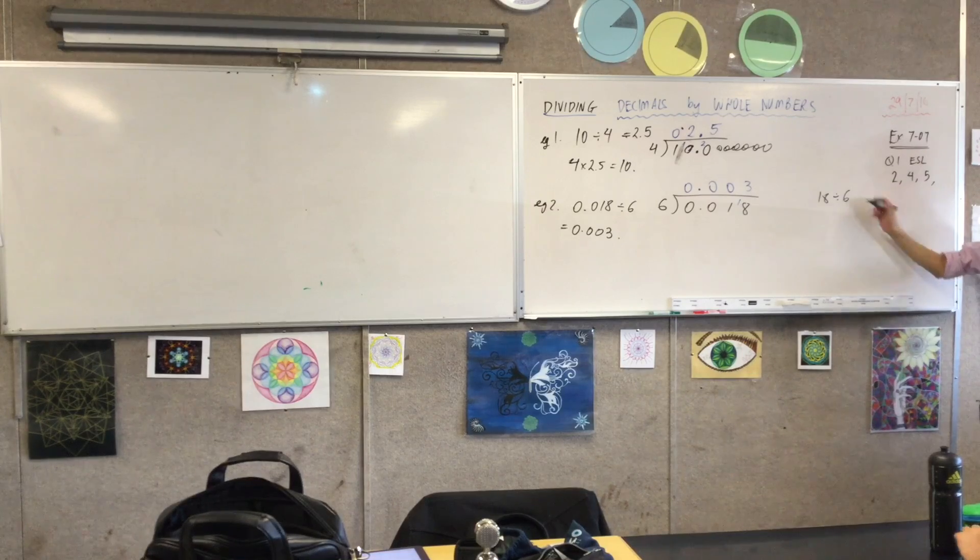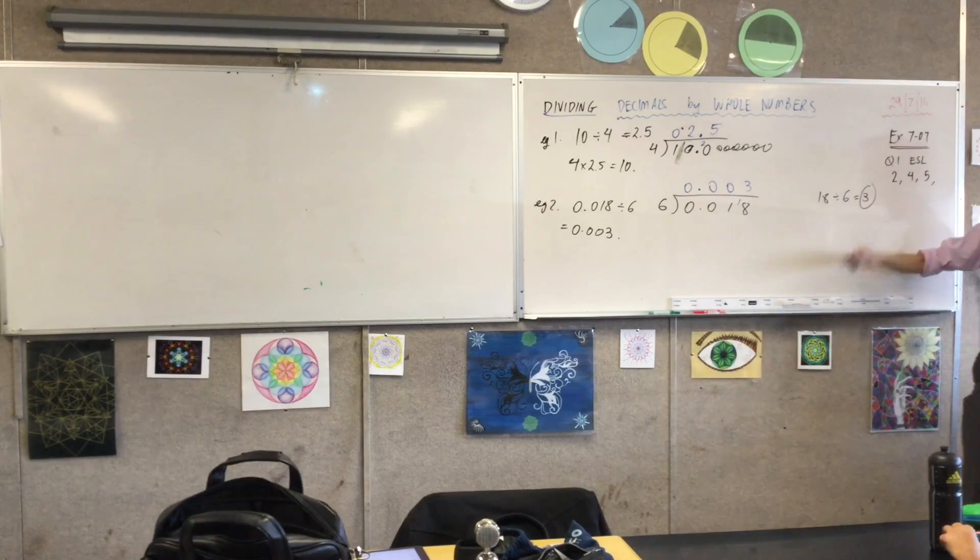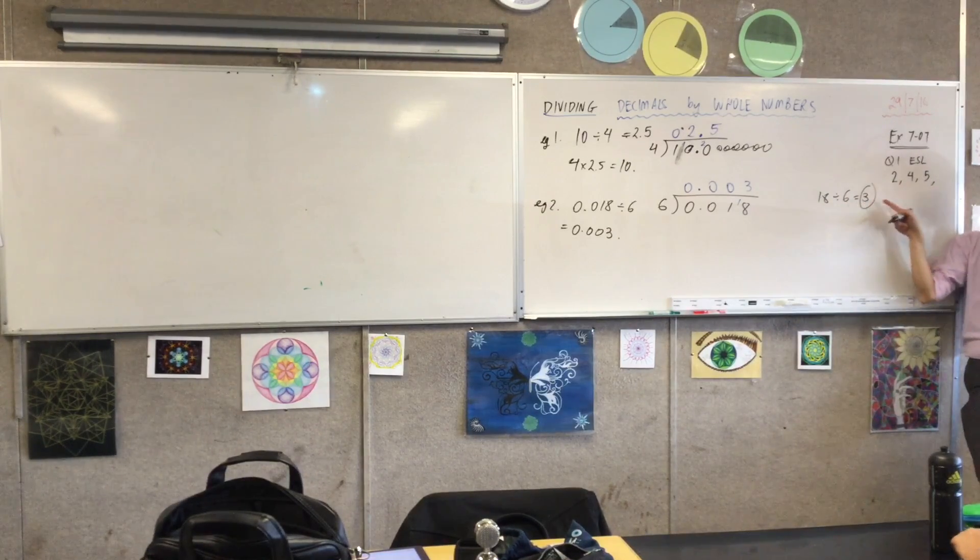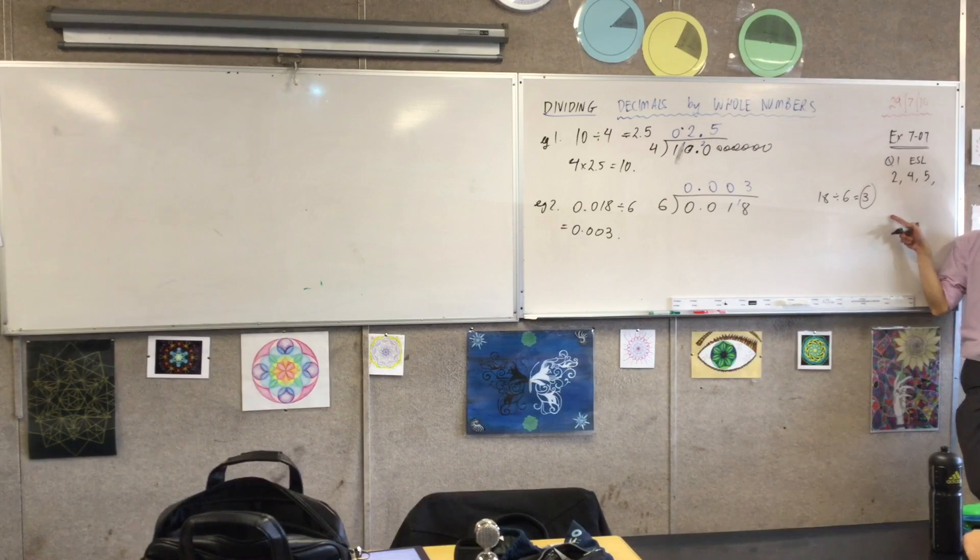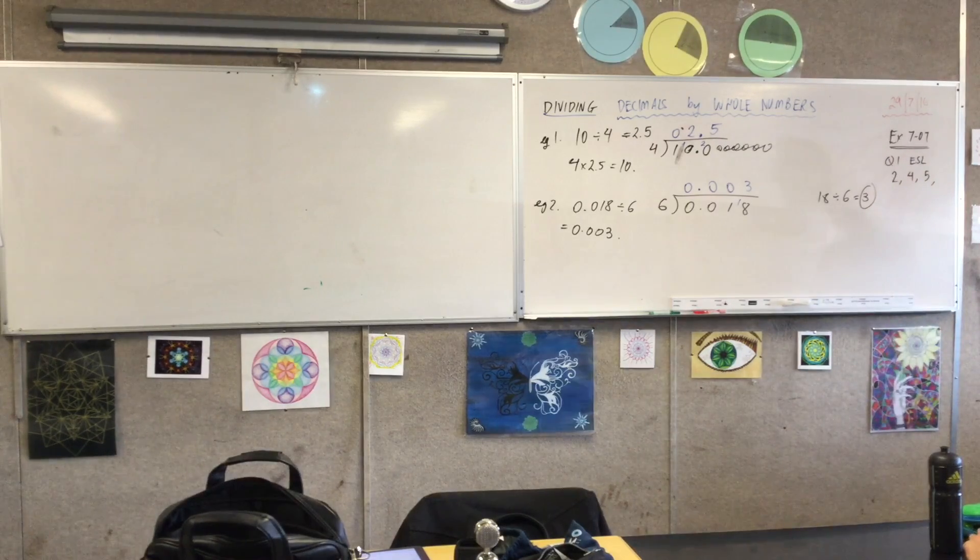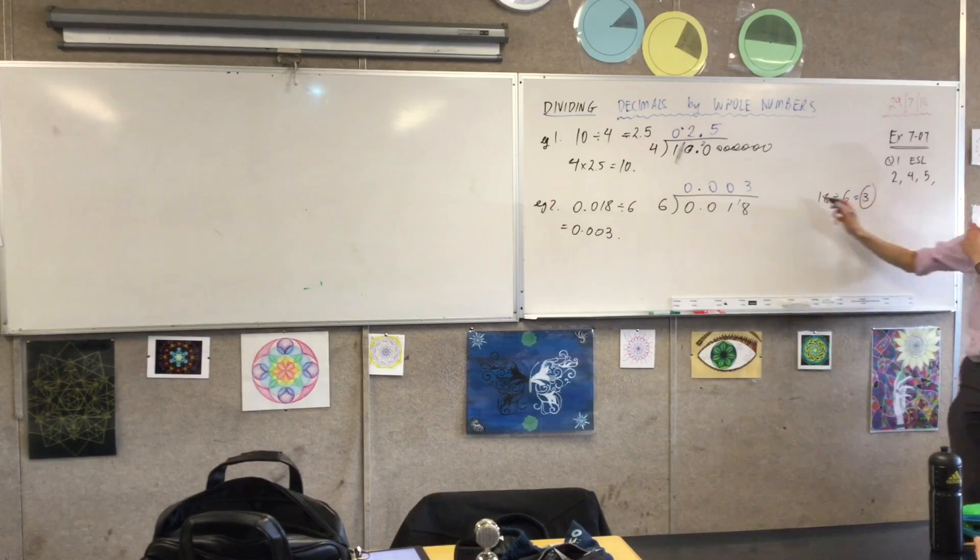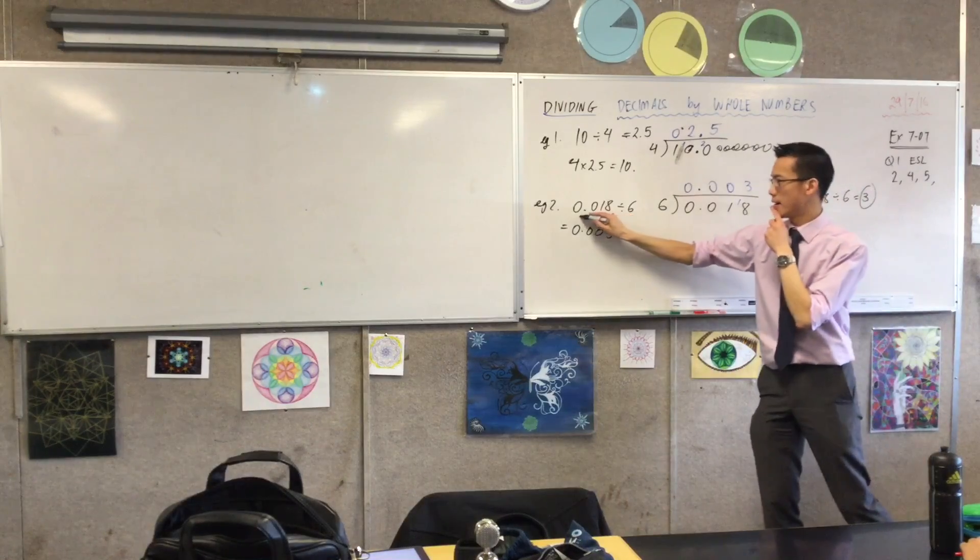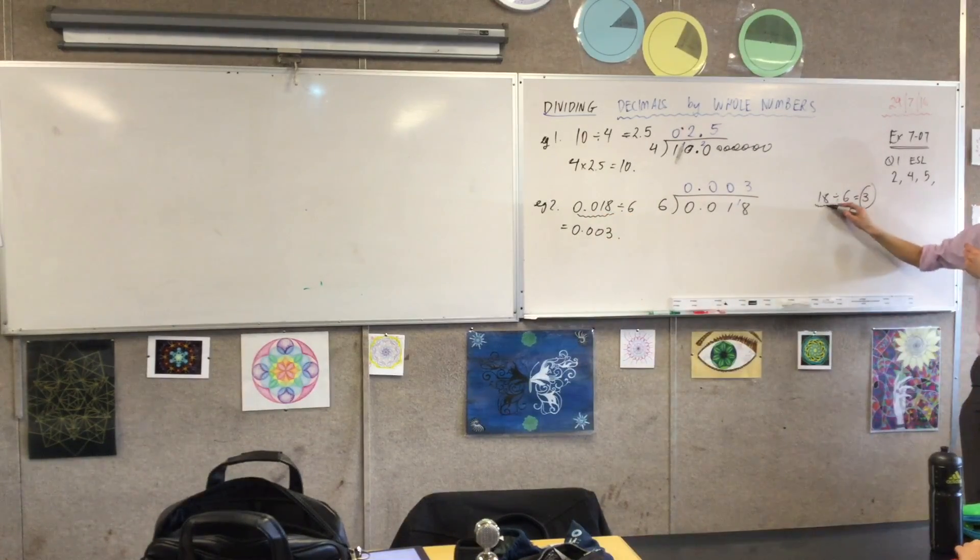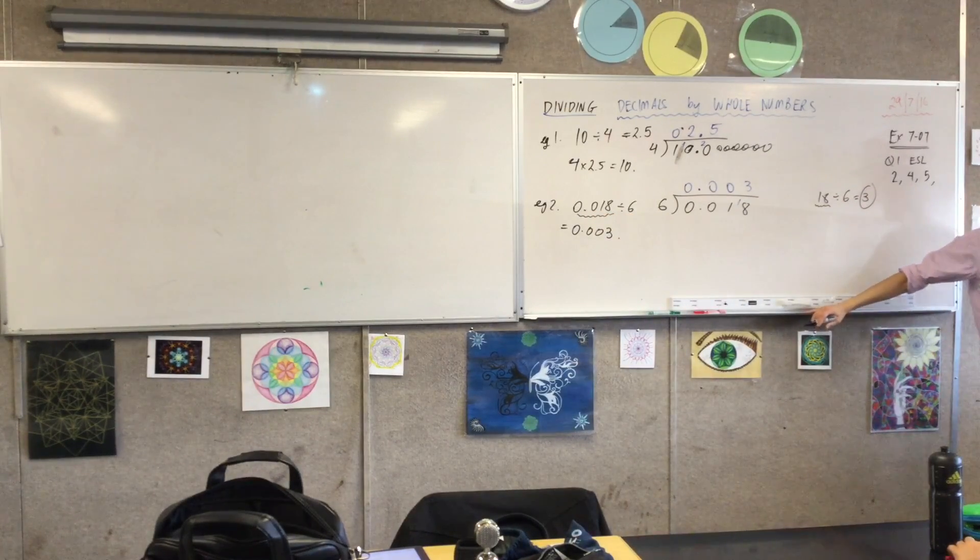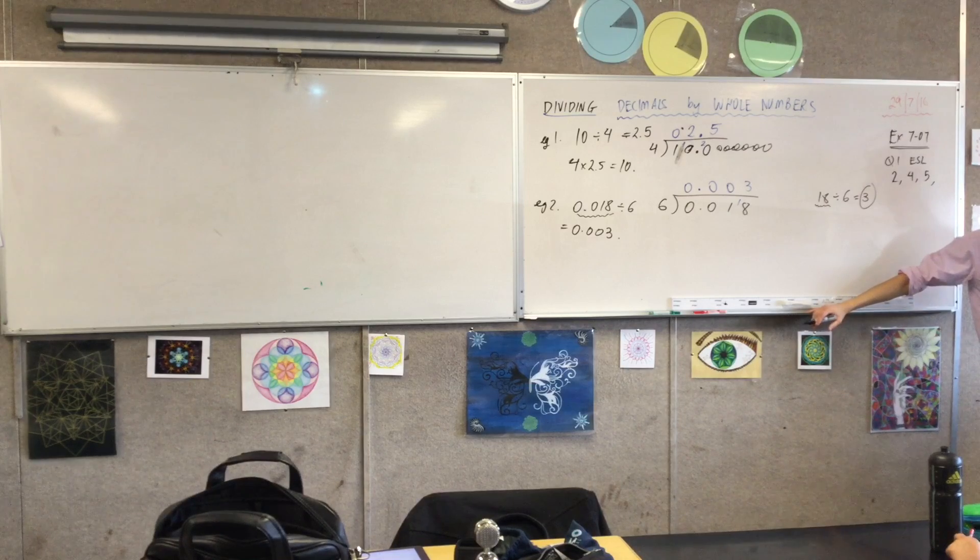But 18 divided by 6, you could have done that right from the beginning. That's just 3, right? Now, what you want to say is, okay, well, 18 divided by 6 is 3. Think carefully. How much smaller is this number than this number? How many times smaller is it? Think carefully.